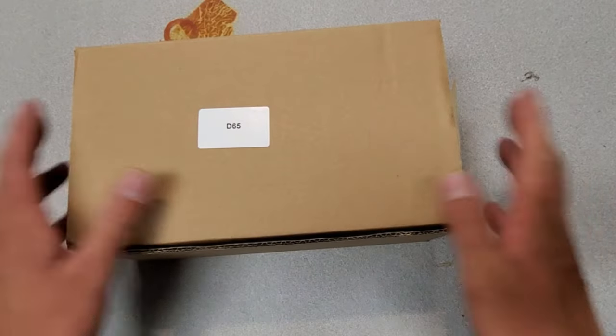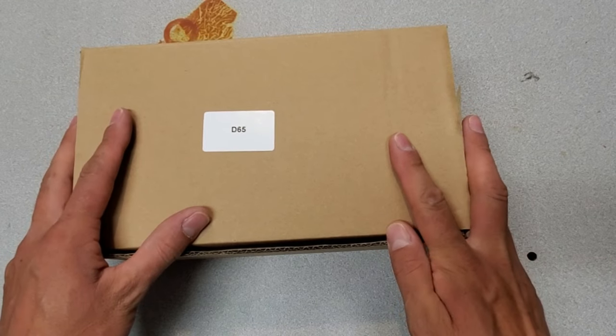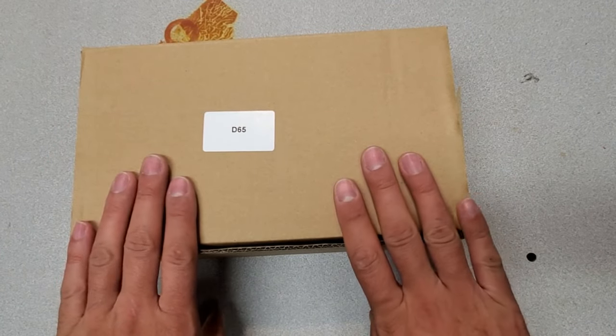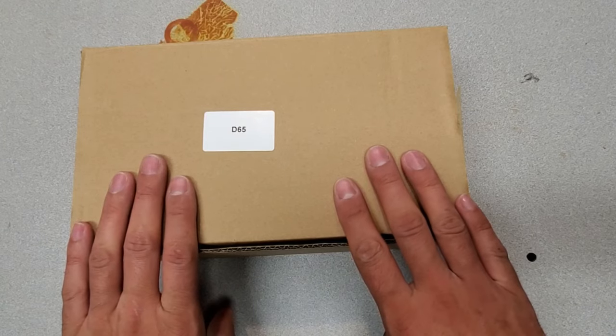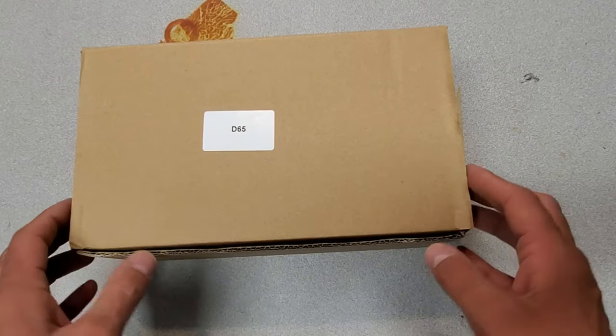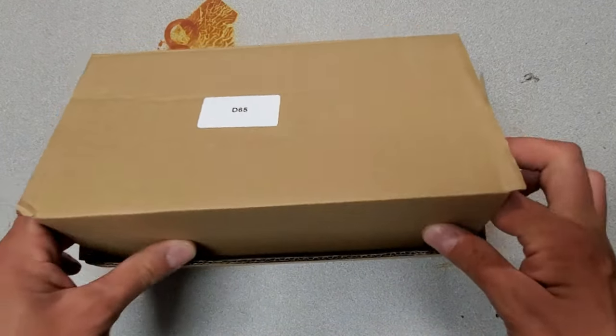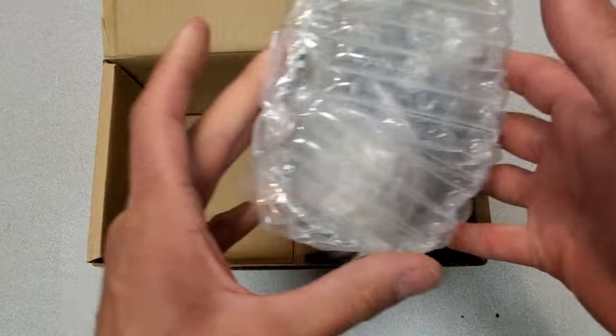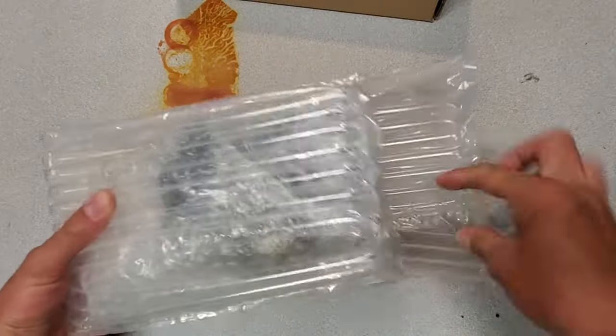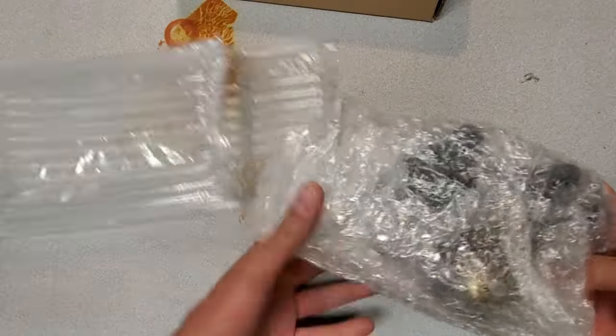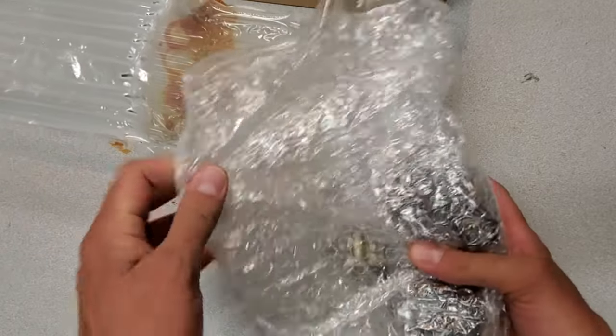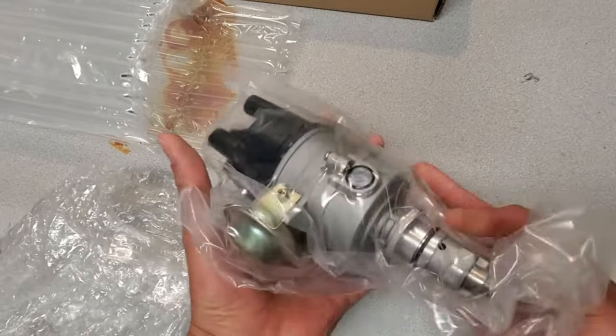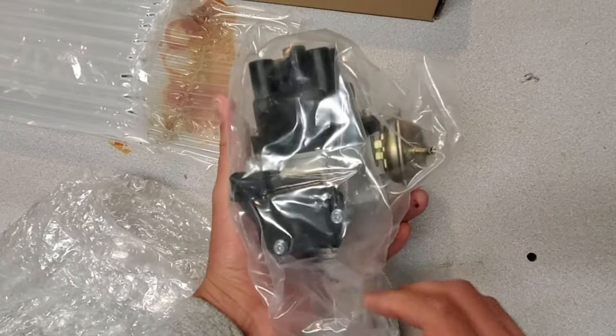So what we've got here is the new 65D distributor from Power Spark, and I'm going to recurve it for the red Mini. I'm going for a fast road curve, so I'm going to show you guys this new unit. They do a great job packaging these things. I'm going to take this apart and check the advance curve that it has now, and then make adjustments as needed to suit this application. So follow along while I do that.